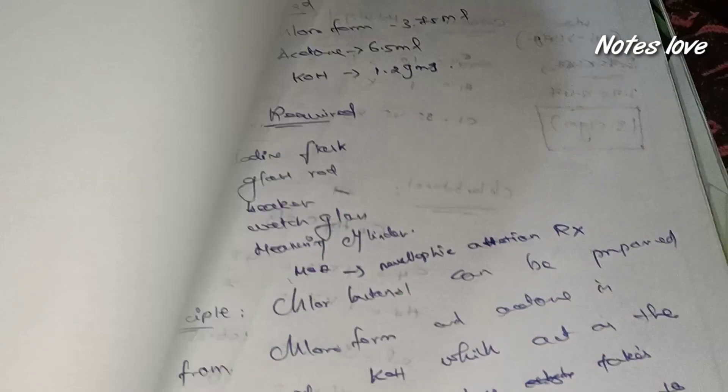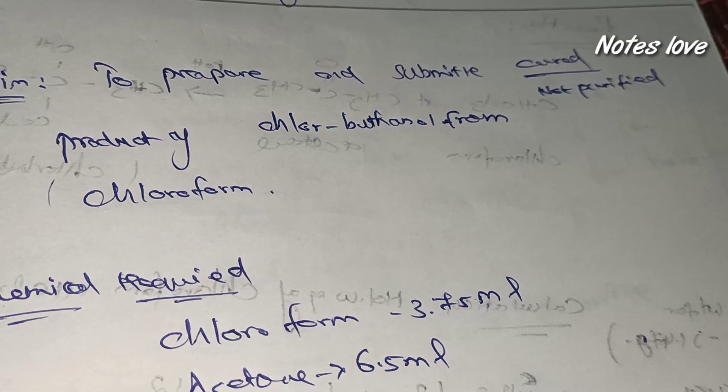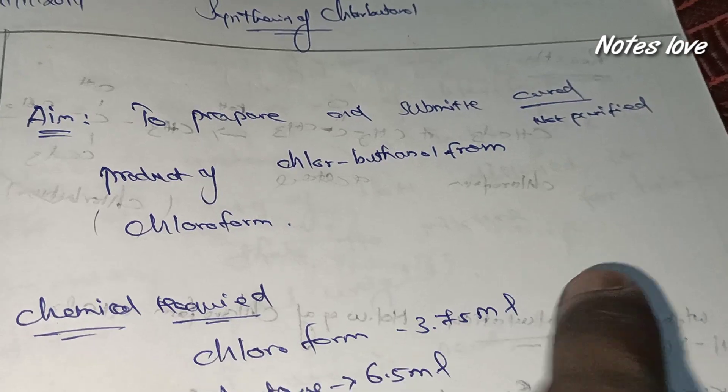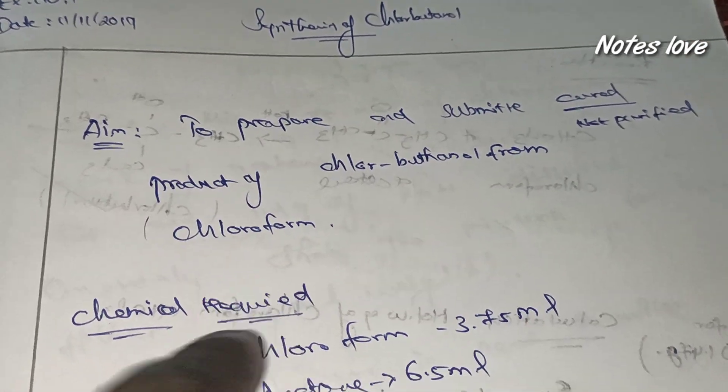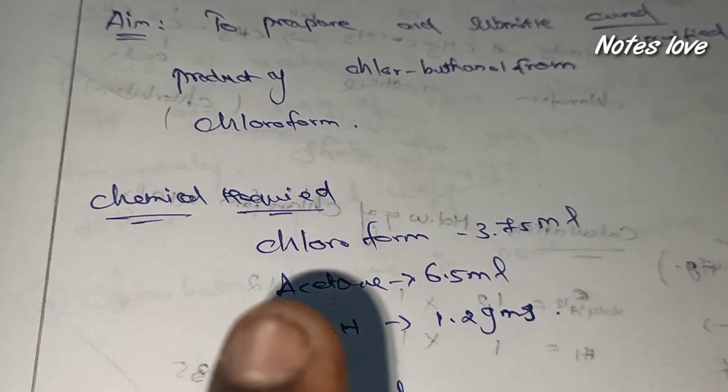First we see the aim: to prepare and submit crude, it's not good means it's a not purified product of chlorobutanol from chloroform.